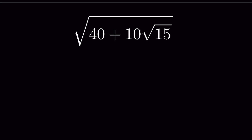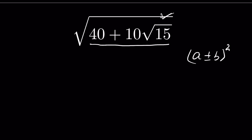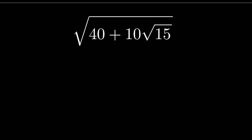We have to simplify √(40 + 10√15). To simplify it, we need to remove this outer square root. If we can write these two terms in the form of (a + b)², then that square can cancel with the square root.